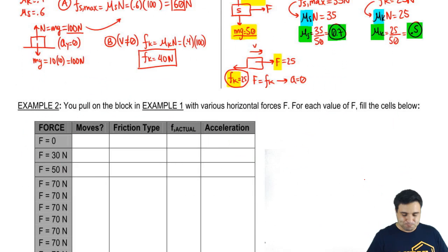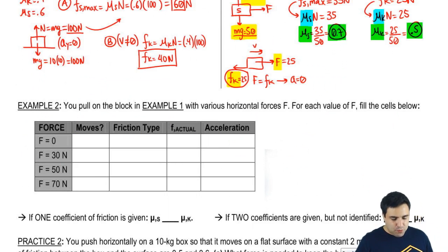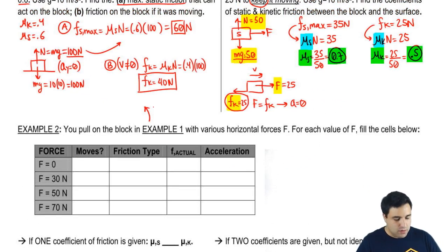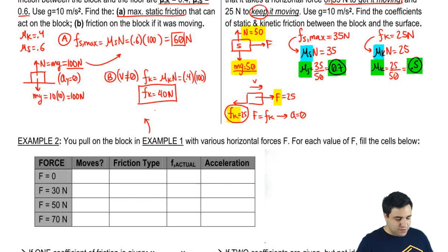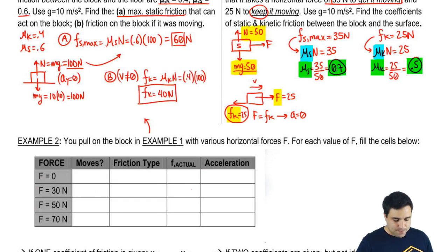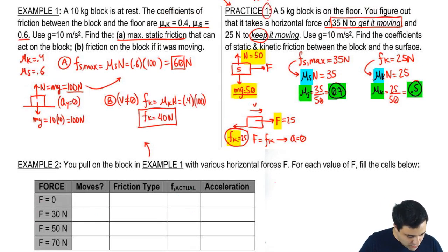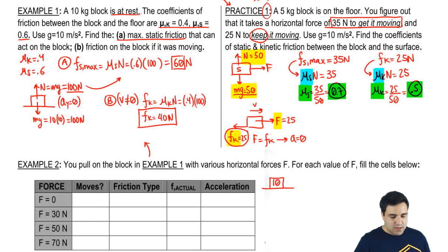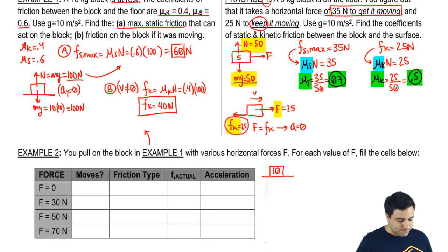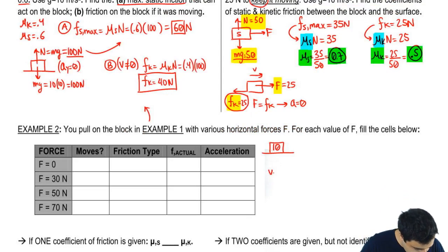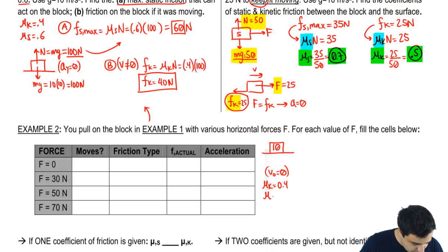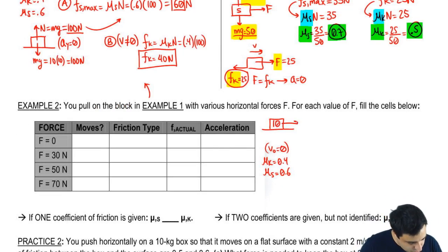Moving on to Example 2. Using the same 10-kilogram block from Example 1, I pull it with various horizontal forces F. For each value of F, I'll fill in the cells to show what's happening. The block starts at rest — initial velocity is zero. The coefficients of friction are μk equals 0.4 and μs equals 0.6. Recall that kinetic friction equals 40 Newtons and maximum static friction equals 60 Newtons.